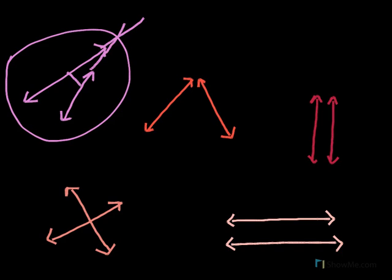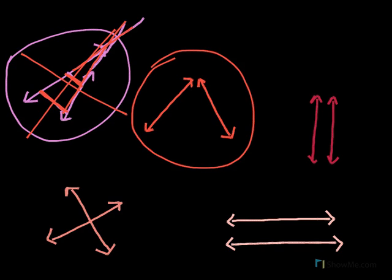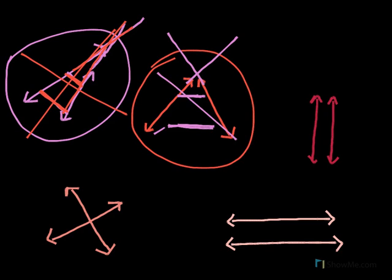They're not an equal distance apart through their entire length — as you can see, they're a little closer here and a little further there. So they aren't equidistant through their whole length, and if you continued the lines on they would intersect. So these are not parallel. Now let's check out these salmon-colored ones. Again, these lines are not intersecting yet, but I can tell because they're not an equal distance apart — the top is closer than the bottom. If I continue the lines on, they would eventually intersect, so these are not parallel either.